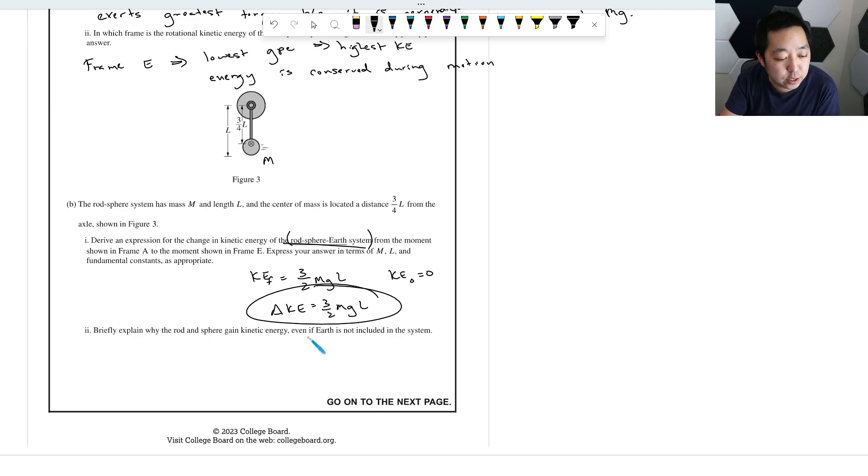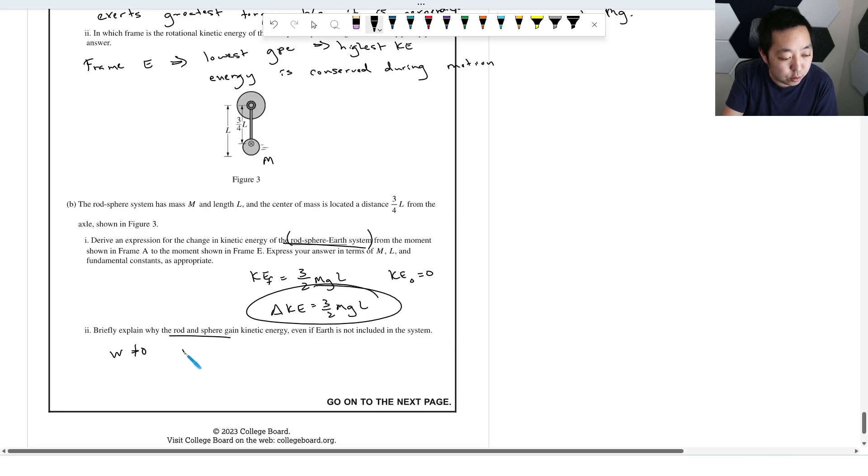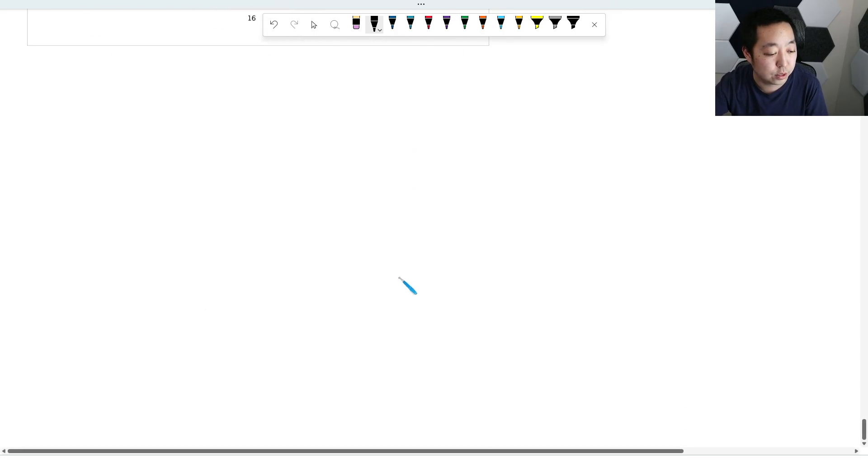Briefly explain why the rod and sphere gain kinetic energy, even if the Earth is not included in the system. Okay, so if you don't include the Earth in the system, then we're saying that gravity is not part of the system. The Earth's not part of the system. Gravity is not an internal force. Gravity will do work on the system. So if the Earth's not included in the system, then the work is no longer zero. The work is due to work done by gravity, because gravity does work on the system. So the work done by gravity increases the kinetic energy. Okay, so gravity does work, because if you don't include the Earth in the system, mg is now an external force, and there is work. When you included the Earth in the system, mg was an internal force, so there was no work. That's why we do conservation of energy, because the work is zero at that point. Okay, there's that one.